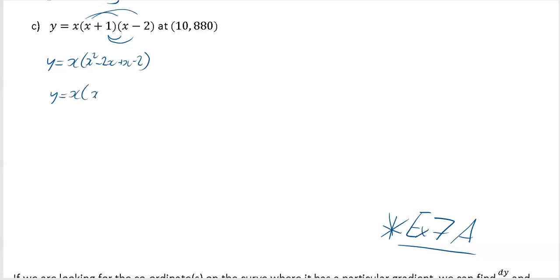So y equals x times, tidy up inside the bracket to make life easier, x times x squared minus x minus 2. My last step just to get into index form is multiply it out completely. So multiply through by the x to give you x cubed minus x squared minus 2x.